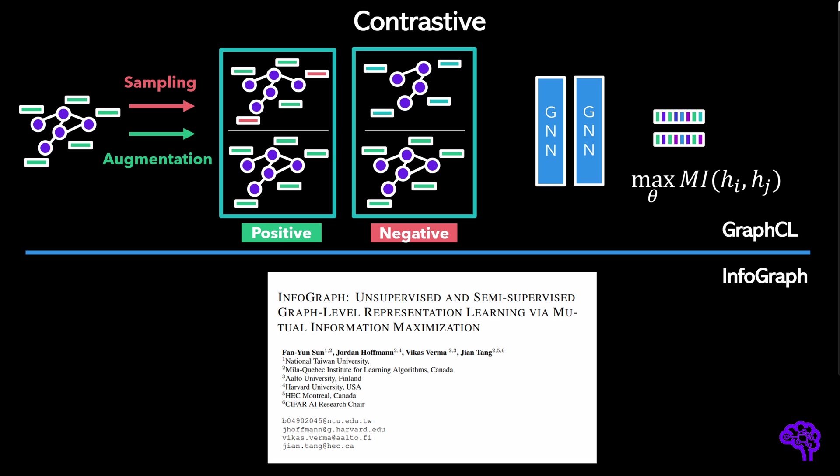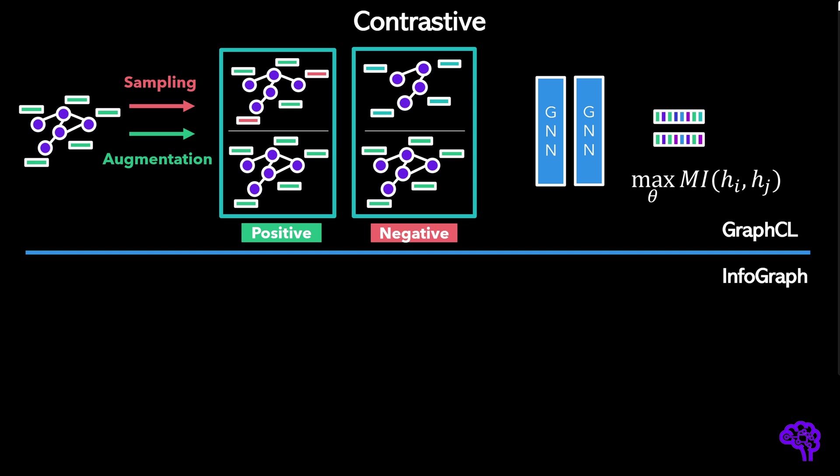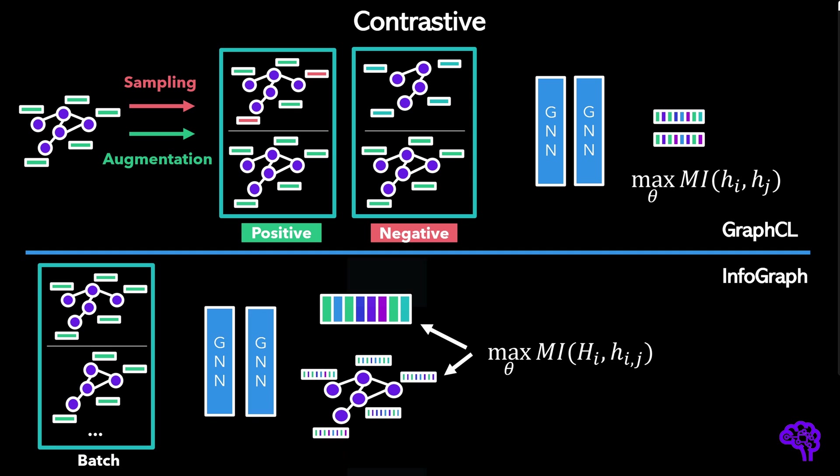It was proposed in 2020 and motivated by a model called DeepInfoMax from 2018. The idea of InfoGraph is to contrast between the representation of entire graphs and the representation of substructures. More specifically, it contrasts all possible combinations of node and graph level embeddings within a batch. The model has the task to predict if a node embedding and the graph embedding originate from the same graph. There are many more contrastive frameworks for graphs, but the main idea is always similar.